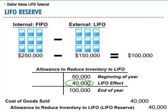The journal entry would appear as follows. The LIFO reserve would be deducted from inventory to ensure that the inventory is stated on a LIFO basis at year-end.